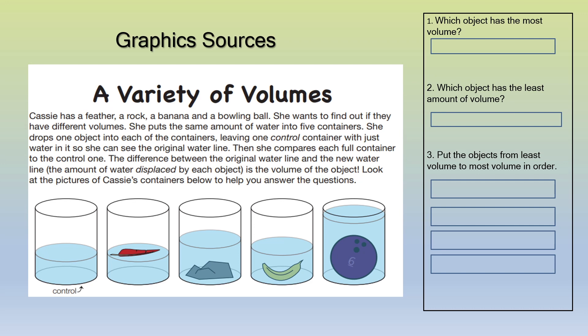The difference between the original water line and the new water line is the volume of the object. Look at the pictures of Kiasi's containers below to help you answer the questions. Question number one: which object has the most volume? The bowling ball. That is correct. Question number two: which object has the least amount of volume? That is correct — the feather.